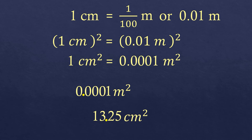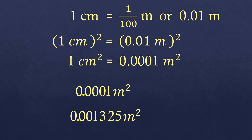Let's try with a decimal number: 13.25 square centimeters converted to square meters. We move the decimal point four times to the left — one, two, three, four — fill in empty spaces with zeros, change the unit to square meters, and add a 0 on the left side. So 13.25 square centimeters equals 0.001325 square meters.